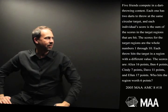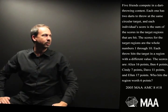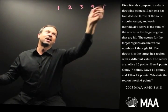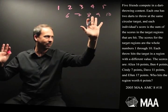The scores for the target regions are the whole numbers 1 through 10. So I guess there are 10 regions. One is worth 1 point, 2 points, 3 points, 4 points, 5, 6, 7, 8, 9, 10. All right.